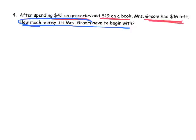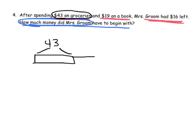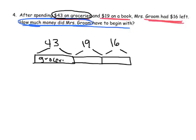So, this is asking us the total. So, our tape diagram says, after spending, let's see, $43 on groceries. So, I'm going to say, okay, one way to draw this is, here's my $43 on groceries and $19 on a book. She had $16 left over. So, we could put groceries, book, and leftover.